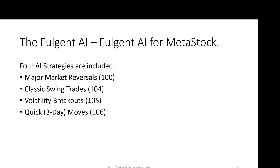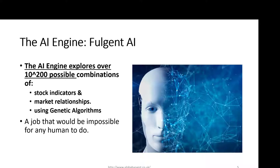We use the Fulton AI Engine that sits on the MetaStock platform. Just to recap, this AI does 10 to the power of 200 different possible combinations of stock market indicators and market relationships, using genetic algorithms and a tremendous amount of computing power to come up with those four AI Trading Strategies.